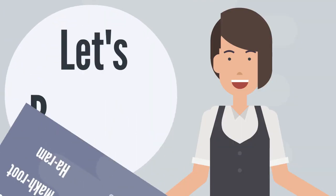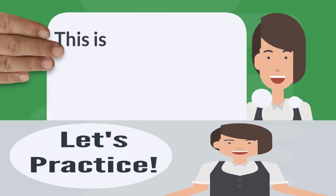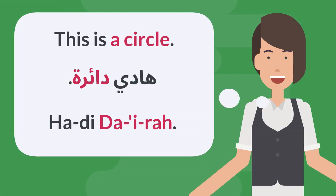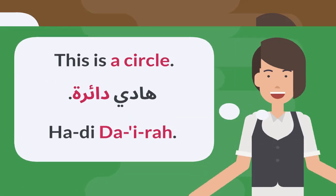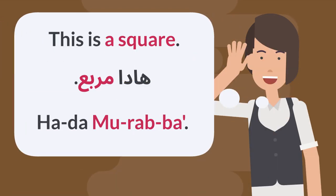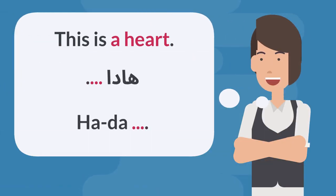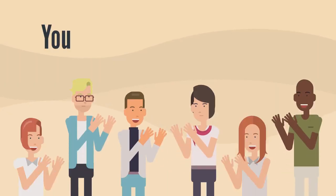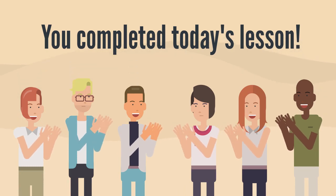Let's practice. This is a circle — هاذي دايرة. هاذي دايرة. This is a square — هاذا مربع. هاذا مربع. This is a heart — هاذا قلب.